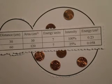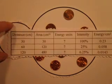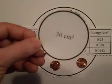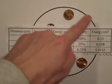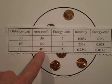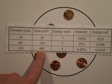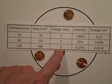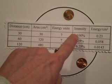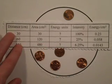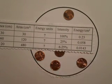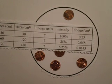Now let's just for fun double this distance again. So we were at 30 — that was this little circle. Then we went to 60 centimeters away and that's this circle. Let's double it again and go to 120 centimeters away. Now our area is going to be four times larger than it was at 60 centimeters, so now it's 480 square centimeters, but our light units of seven is still the same. That means our intensity is going to be 6.25% of what it was at 30 centimeters. Seven divided by 480 is a pathetic 0.0143 units of light per square centimeter — the light is just so dim you can really tell the difference.